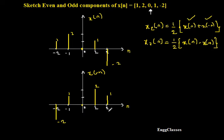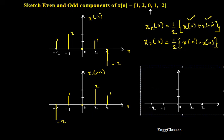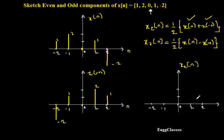Now I need to find the even part x_e[n]. I add x[n] and x(-n) sample by sample, then divide by 2. Let me go term by term at positions minus 2, minus 1, 0, 1, and 2.